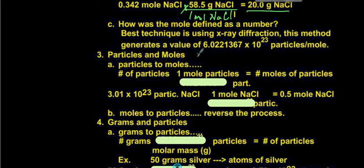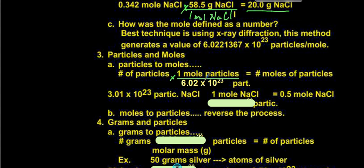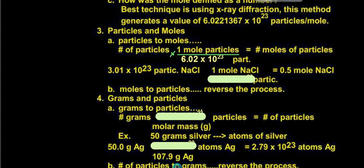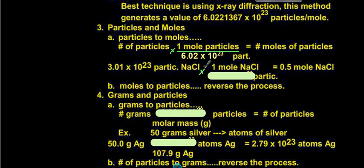Because we have that number, we can also convert between particles and moles. If we're going from the number of particles to moles, it's straightforward — that many particles equals one mole. We know there are 6.02 × 10²³ of anything in one mole, so we multiply our number of particles by 1 mole over that number. For example, 3.01 × 10²³ particles of NaCl times 1 mole over 6.02 × 10²³ particles gives us half a mole.